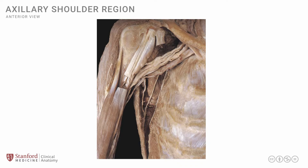In this lesson, we will review the structures on the anterior side of the arm. We will look at the muscles and we will look at some of the neurovascular structures that are in this region. Let's start by looking at a photograph of a cadaver dissection that shows the proximal part of the shoulder area and the anterior part of the arm.